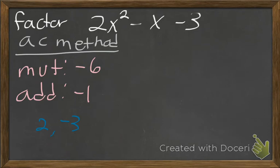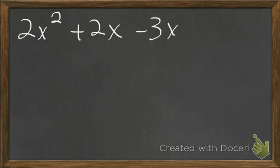In the AC method, once you find those two numbers, you have to rewrite the polynomial to do factor by grouping. So I'm going to rewrite this entire polynomial. It's the middle term, that negative x that we have, that's going to change using our two new numbers that we found. 2x squared. We had a positive 2x and a negative 3x, and still a minus 3.